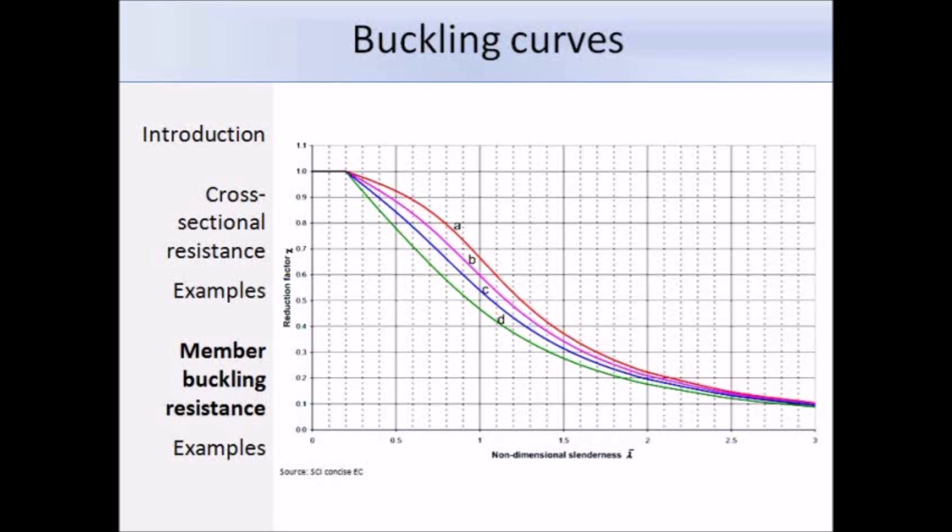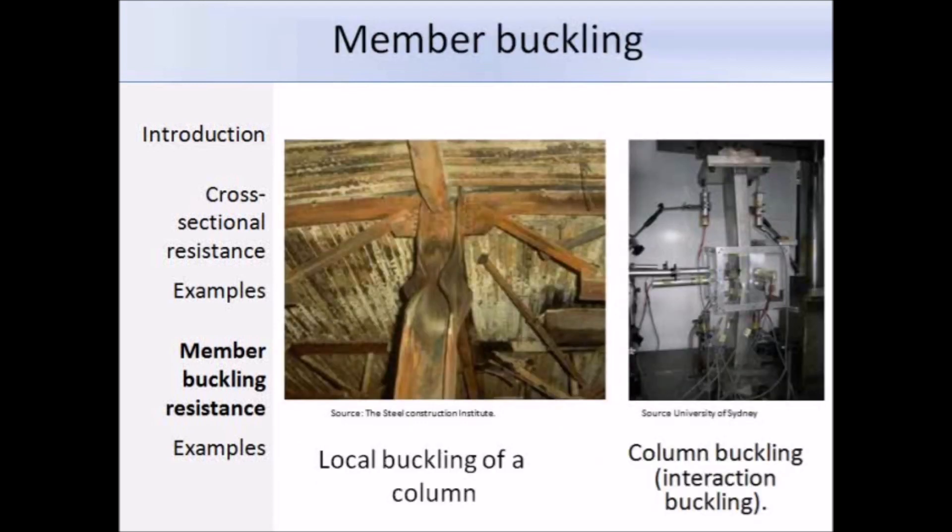Here are two photographs showing failure by buckling. On the left you can see some local buckling in the column, and on the right you can see some column buckling, so that's interaction buckling.